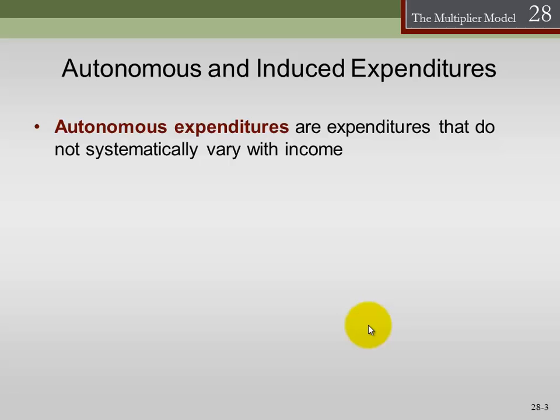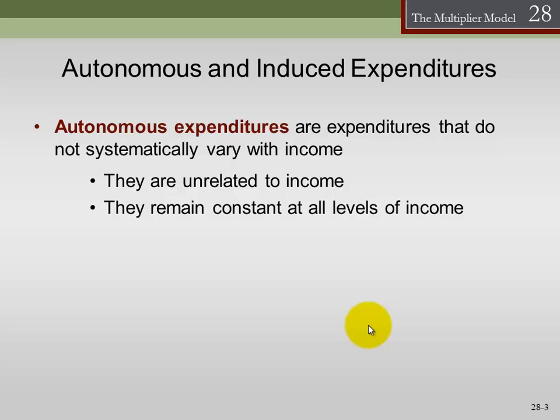We can also talk about expenditure in terms of autonomous expenditure. Autonomous expenditure is that part of expenditure that's not determined by income — it doesn't vary with income. You can think of it as the amount of expenditure that happens even if we have zero income, so it's the subsistence level of expenditure. These are unrelated to income and remain constant at all levels of income — essentially what we spend no matter what.